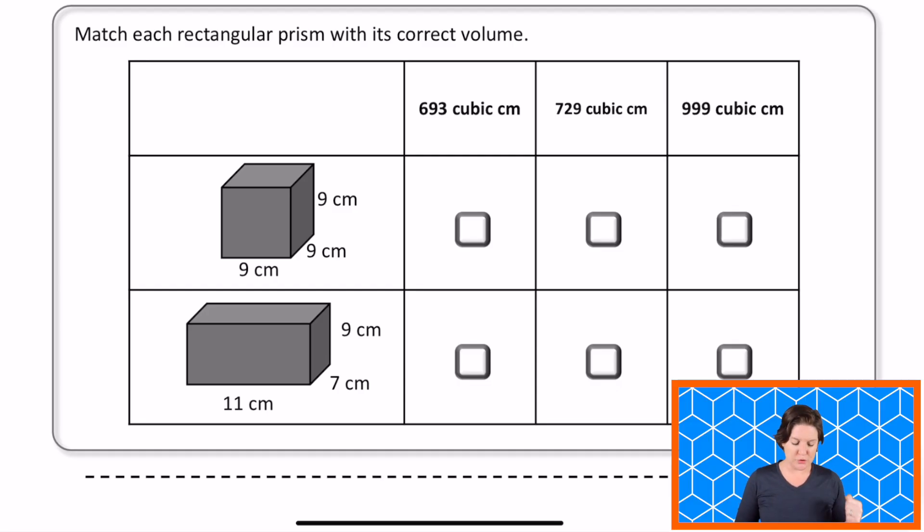Welcome back, fifth grade. So this one says to match each rectangular prism with its correct volume. Volume is the amount of space an object takes up, that's right, find the length times width or base, and multiply the height. That's what we're gonna do here.